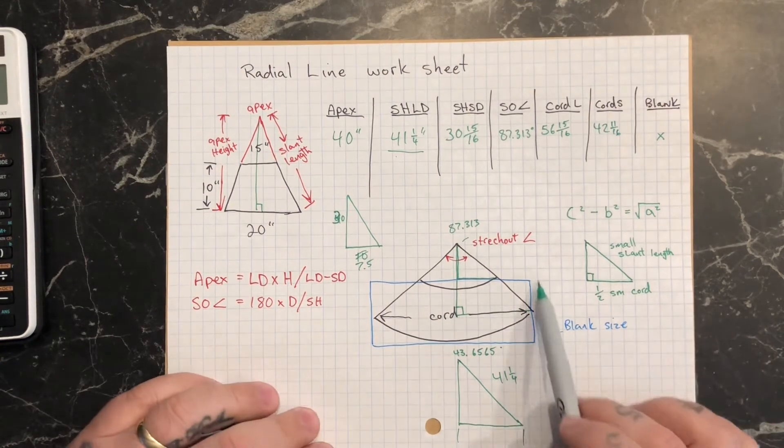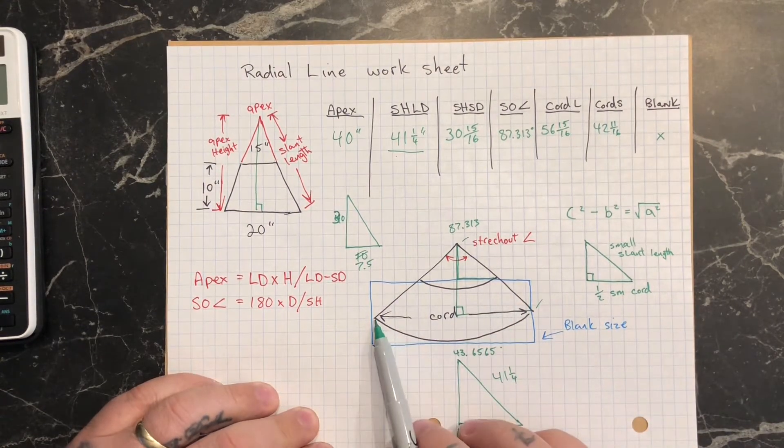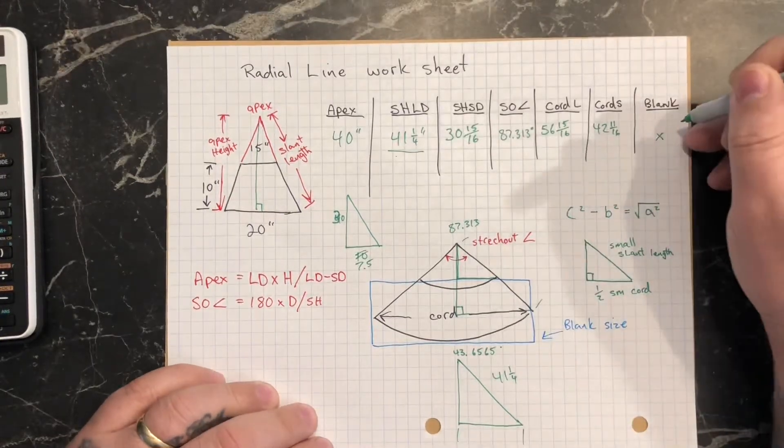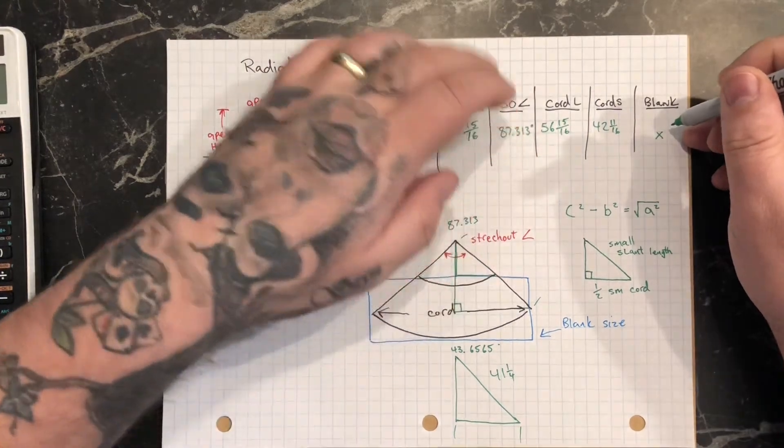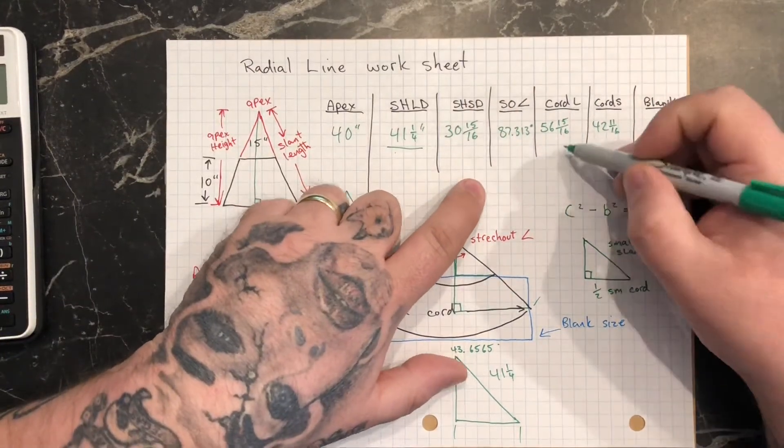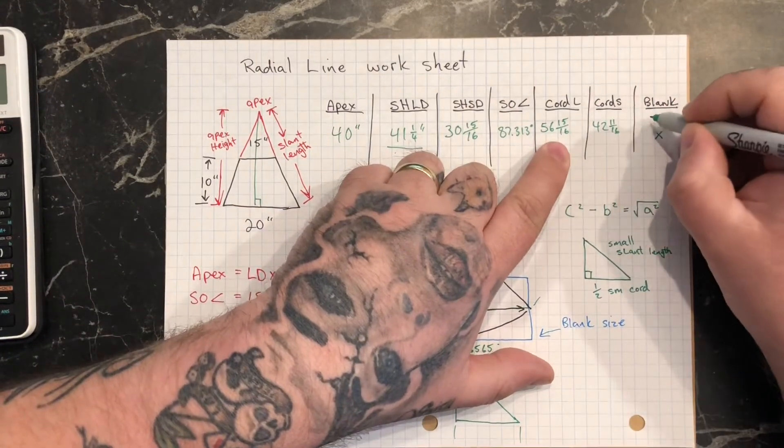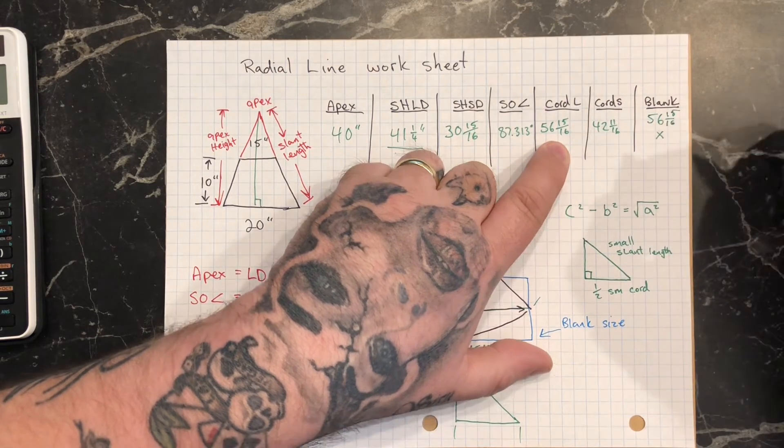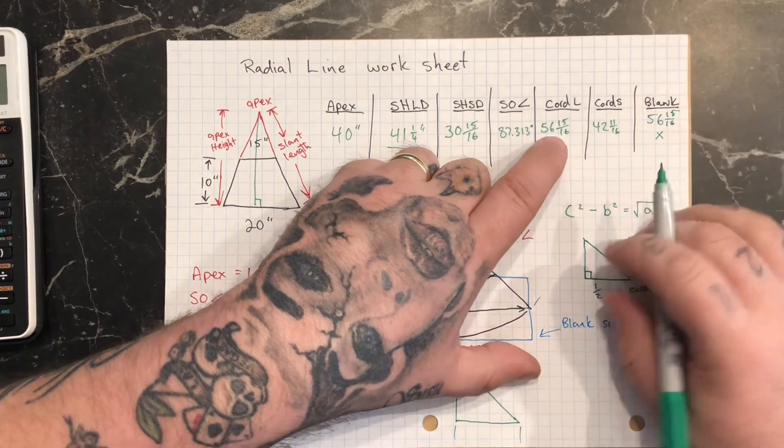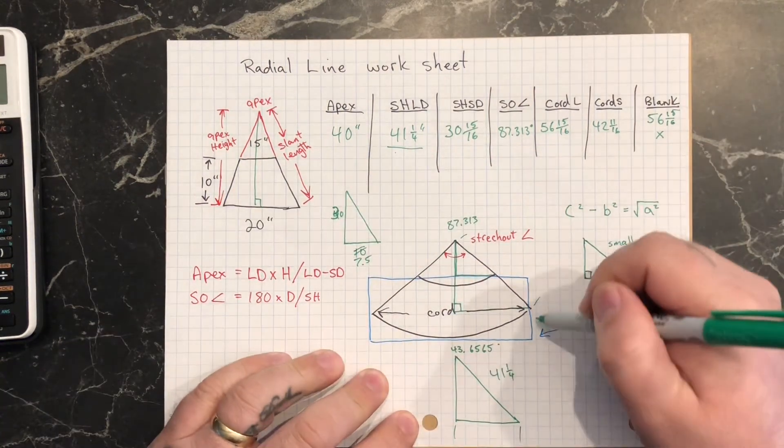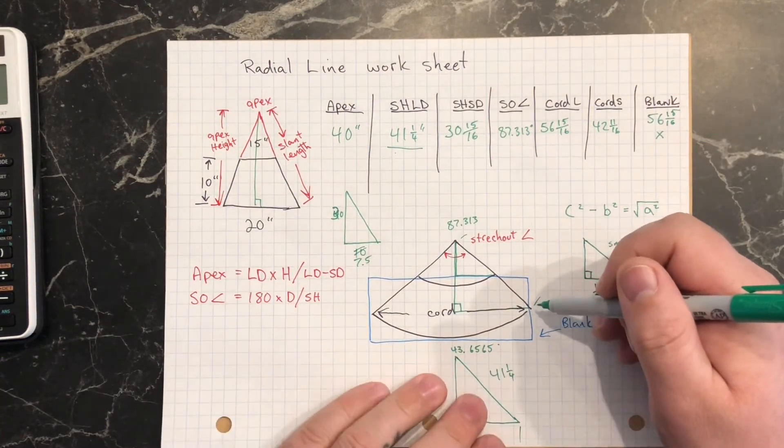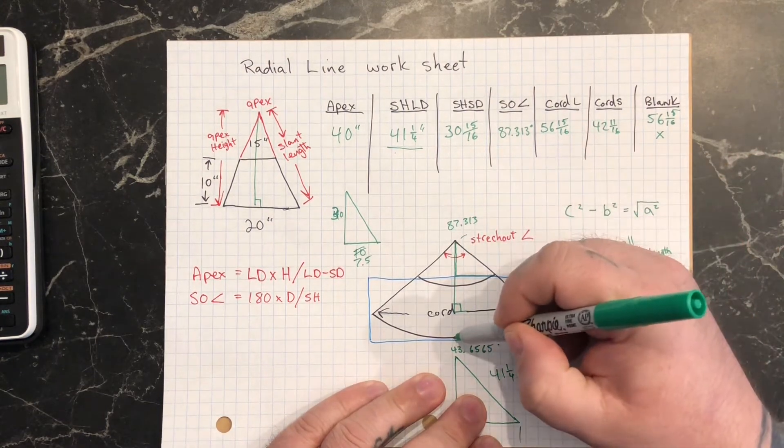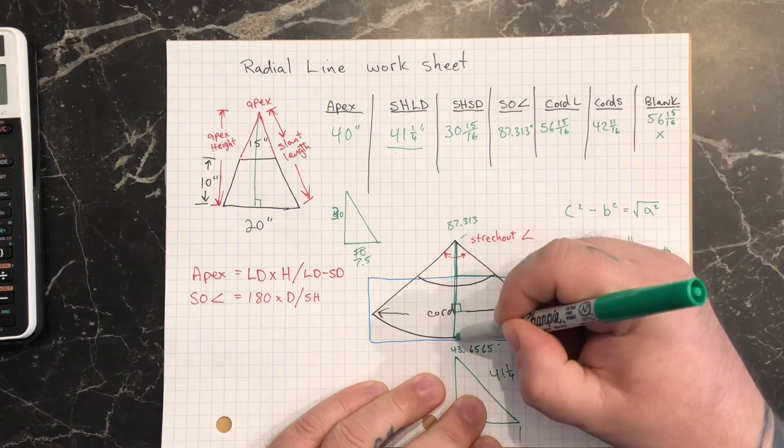Now with the blank size, I've drawn it here in blue. You can see the widest point of the blank size is the same as the large chord length. So automatically we have half of the blank size. So if the large chord length is 56 and 15 sixteenths, that's part of our blank size. The other one is going to be the height here. So we know that the slant length, if I bring it all the way down to the middle, that length there is the same as this length here.